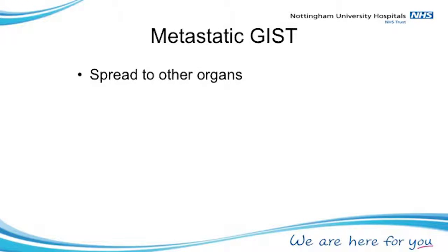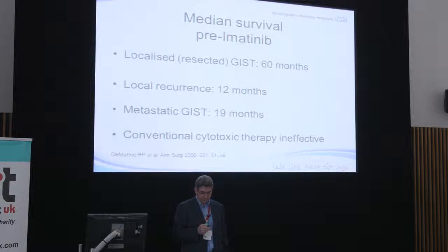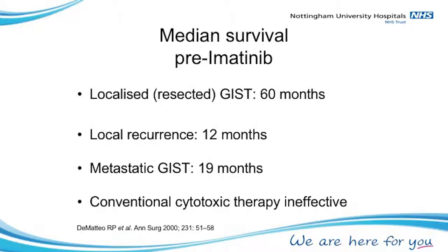Once the GIST has spread, it quite often changes from a potentially curable to an incurable situation. Before imatinib was available, survival of patients with GIST was very poor. If you had disease that had spread beyond what the surgeon could cut out, on average you had 19 months life expectancy. If it had gone to the liver it could be even less. If localised and cut out, about 60 months on average — but a fair number of patients would have the GIST come back within one to two years, dropping life expectancy to 12 months. Chemotherapy didn't work.